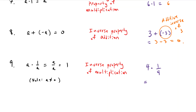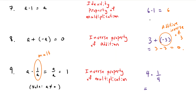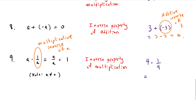The last property is the inverse property of multiplication. The multiplicative inverse of A is 1 over A. Anything times its multiplicative inverse is just 1. So 4 times one-fourth gives 4 over 4, which equals 1. Note that A cannot be 0 because you can't have 0 in the denominator. I hope this was helpful with the properties and explanation of what the real numbers are. Thanks for watching.